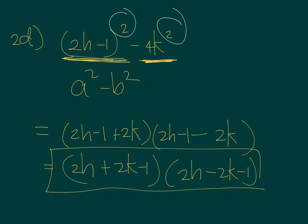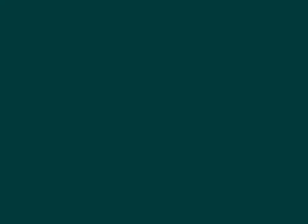And then let's have number 1E. In 1E, I'm sorry, 2E, you have 16 minus 25 times B plus 3 squared.